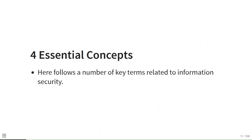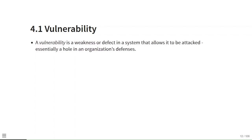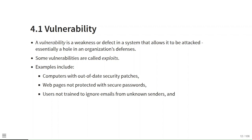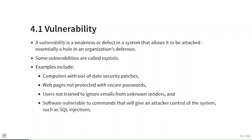Essential concepts: Vulnerability is a weakness or defect in a system that allows it to be attacked — essentially a hole in an organization's defenses. Some vulnerabilities are called exploits. Examples include computers with out-of-date security patches, web pages not protected with secure passwords, users not trained to ignore emails from unknown senders, and software vulnerable to SQL injection attacks.